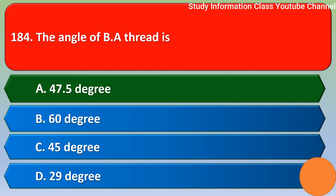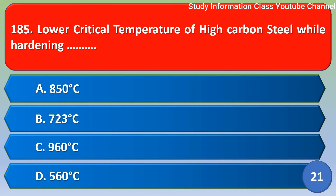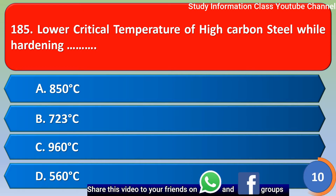Next question: the lower critical temperature of high carbon steel while annealing is — option A 850 degrees Celsius, option B 723 degrees Celsius, option C 960 degrees Celsius. The correct answer is option B — 723 degrees Celsius.